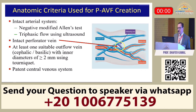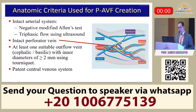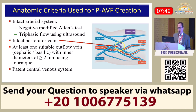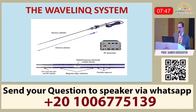You need to have an intact arterial system with a negative modified Allen test and triphasic flow in the arterial system. It is very important to have an intact perforator vein — this is key for this kind of procedure. You need at least one suitable outflow vein, either cephalic or basilic, with an inner diameter of at least more than 2 millimeters using a tourniquet, and a patent central venous system.